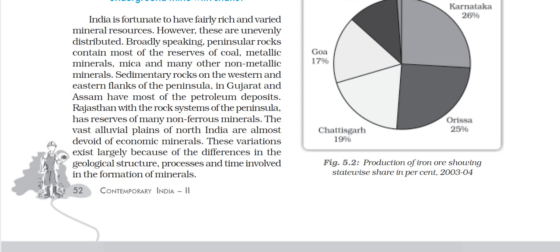Broadly speaking, peninsular rocks contain most of the reserves of coal, metallic minerals, mica, and other non-metallic minerals. Sedimentary rocks on the western and eastern flanks of the Peninsula, in Gujarat and Assam, have the most important petroleum deposits.